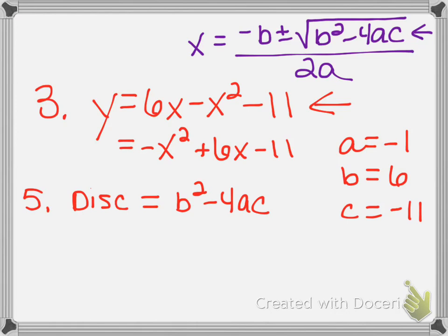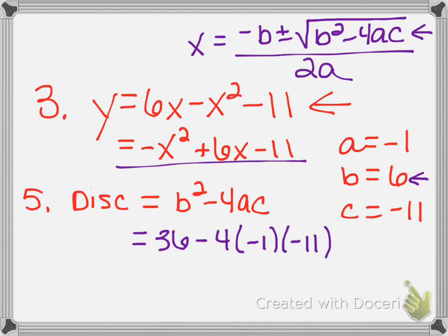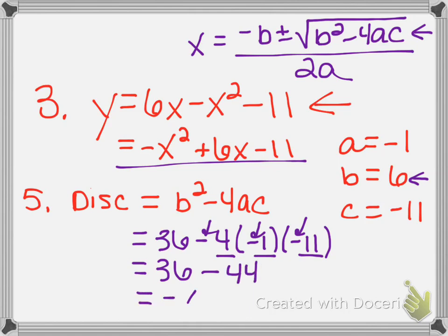For this problem I just want the number and type of solutions. Plugging in: b squared is 6 squared which is 36, minus 4 times a (negative 1) times c (negative 11). I have three negatives multiplying together so it stays negative, and 4 times 1 times 11 is 44. So the discriminant is 36 minus 44, which is negative 8.